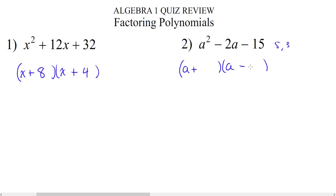Where do we put the 5 and where do we put the 3? We look at the middle term. Since the middle term is negative, we put our bigger number next to the negative sign and our smaller number next to the positive sign. Positive 3 times negative 5 is negative 15, and 3 plus negative 5 is negative 2. So this gives us what we want, and this is the correct answer.